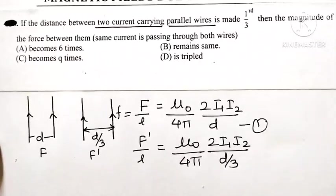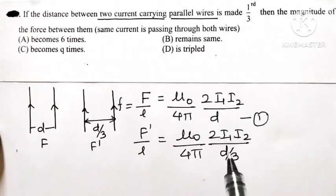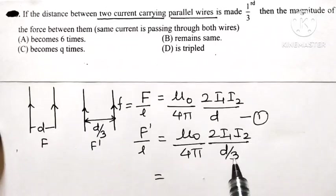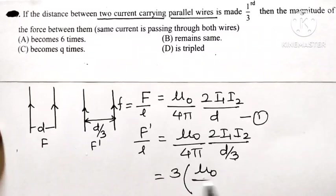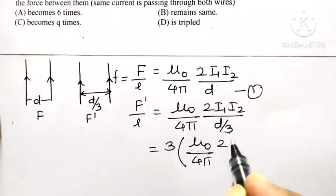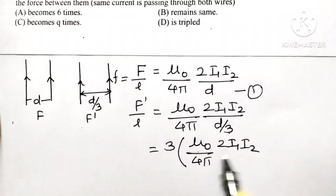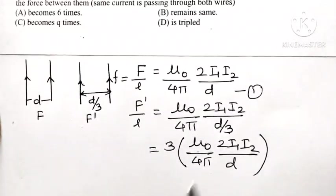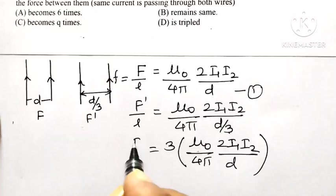Distance is reduced to d by 3. Now this d by 3 means it is 1 by 3 or 3 will come in numerator. So it is 3 times μ₀ divided by 4π, 2I₁I₂ divided by d.